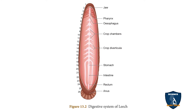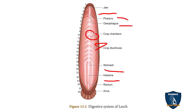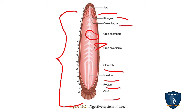In the first five segments the jaw is present, followed by the pharynx. Next is the esophagus, after which the crop is seen. The crop contains a crop chamber and crop diverticula. The portion following the crop is the stomach, then the intestine, followed by the rectum, and the last portion is the anus. The alimentary canal runs from mouth to anus and is a straight tube.